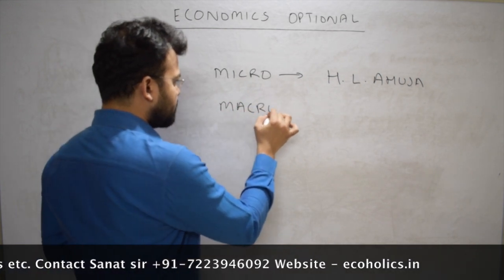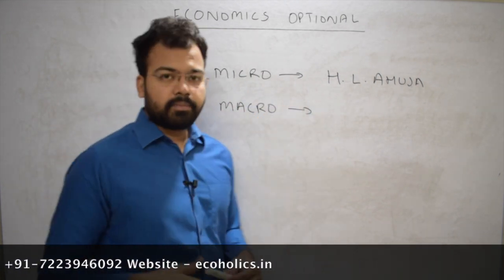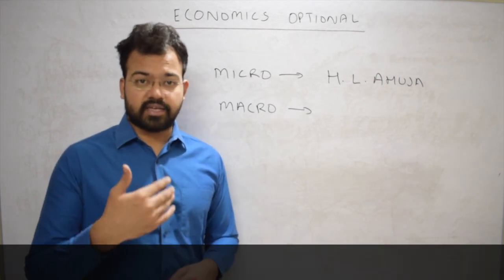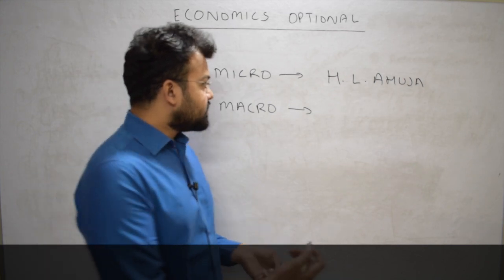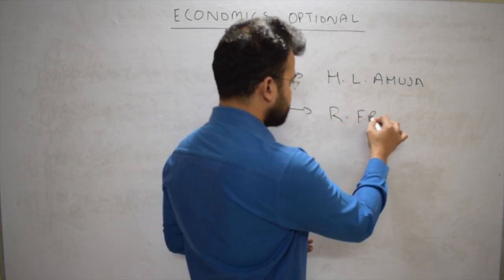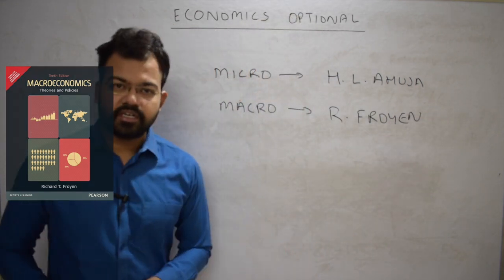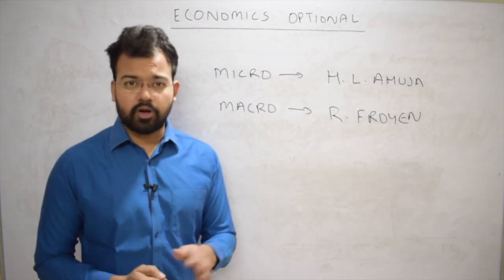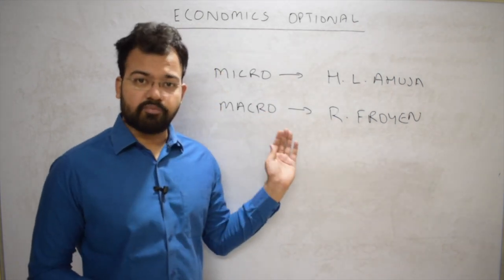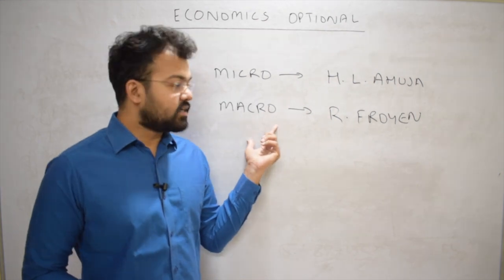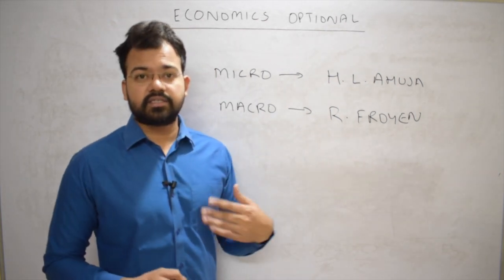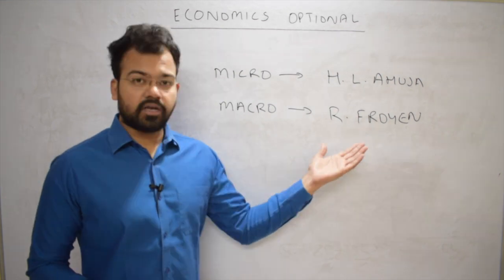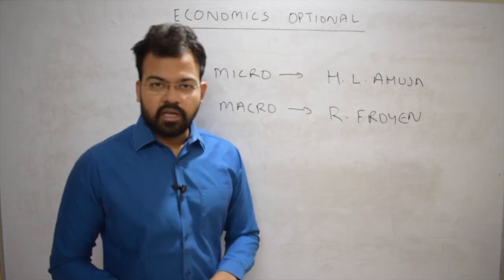For macroeconomics, there is HL Ahuja available, and also books like Richard Froyen and Dornbusch and Fischer. People say the best book is Richard Froyen, but these books generally do not cover the whole syllabus, so you have to refer to other books for certain smaller topics to cover the portion of macroeconomics — including Keynesian theory, classical theory, etc. Richard Froyen carries around 200 to 300 pages, so it is quite manageable.